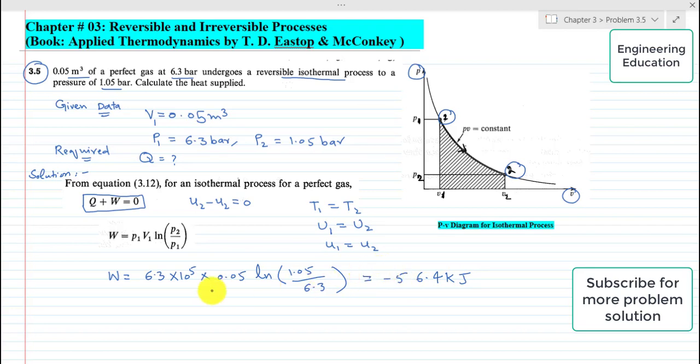Putting this W in the non-flow equation for isothermal process, expression A will become Q + W, and W is -56.4 kJ, and it equals 0. So simplifying this, Q equals 56.4 kJ. This is the required solution of problem 3.5.